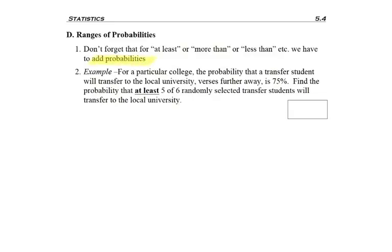So let's look at example two. For a particular college, the probability that a transfer student will transfer to a local university versus further away is 75%. Find the probability that at least five of six randomly selected transfer students will transfer to the local university.